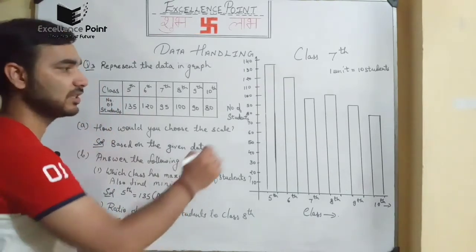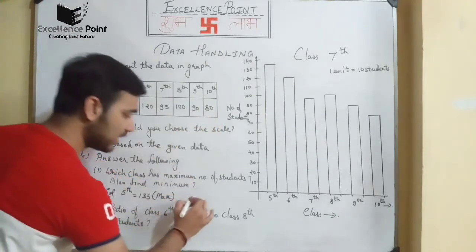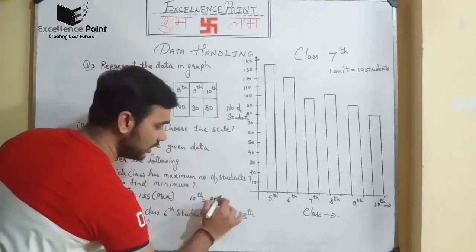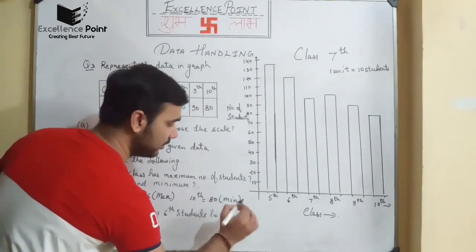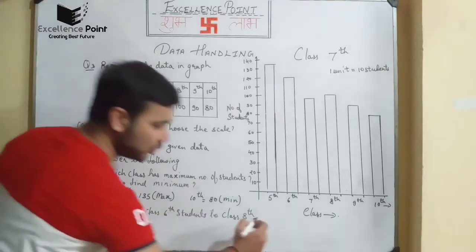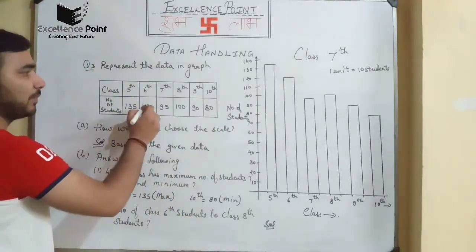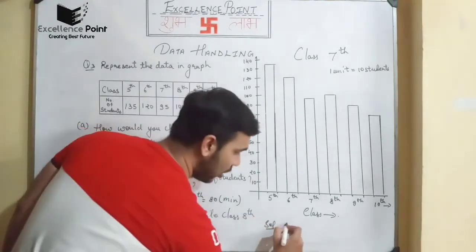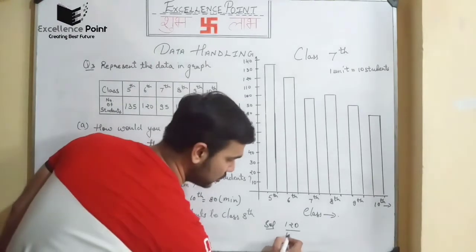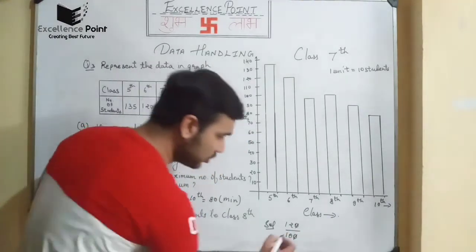The class with the minimum number of students is Class 10, which has 80 students. Now we have to find the ratio of Class 6 students to Class 8 students: Class 6 has 120 and Class 8 has 100. So 120 divided by 100 gives us 6 to 5. The final answer is 6:5.